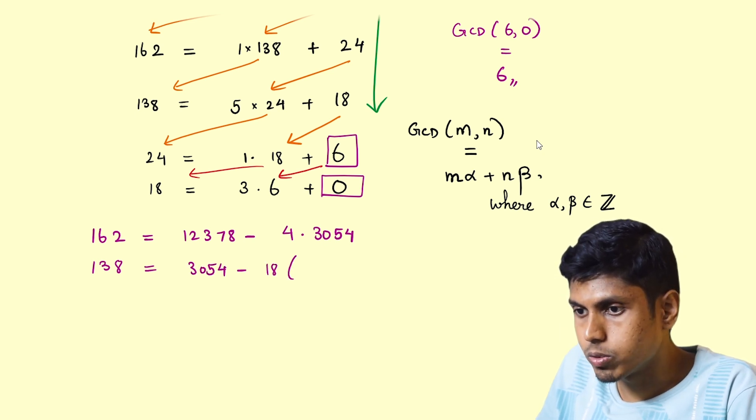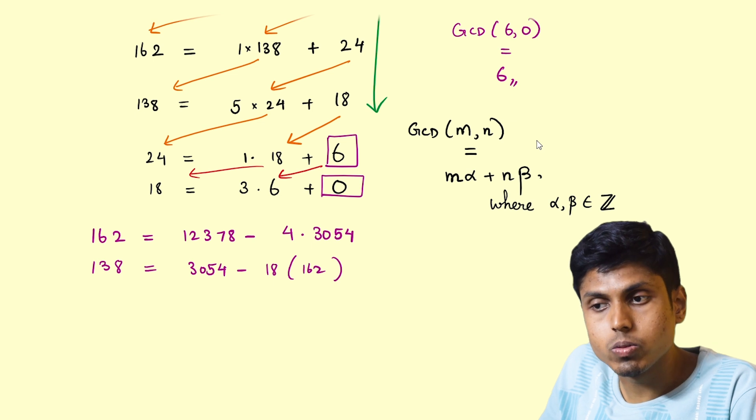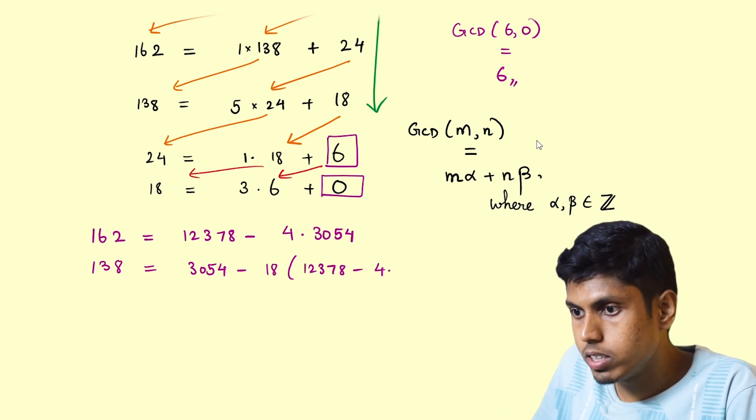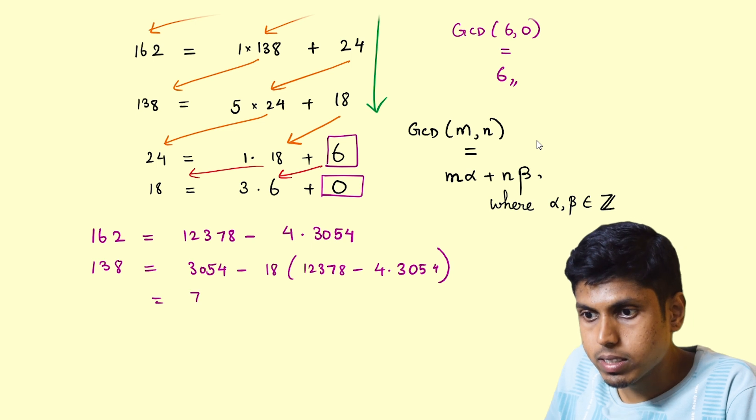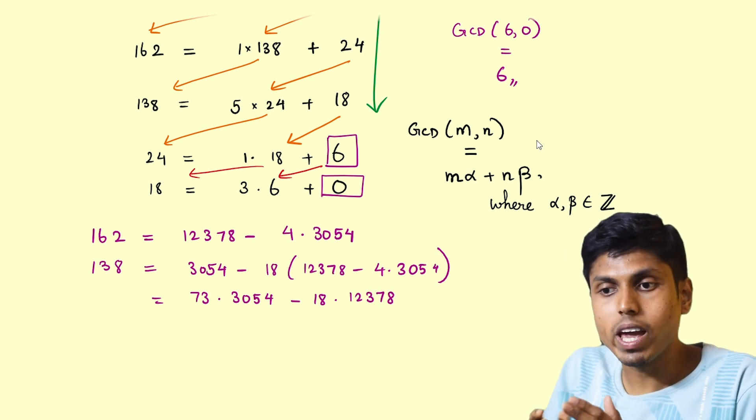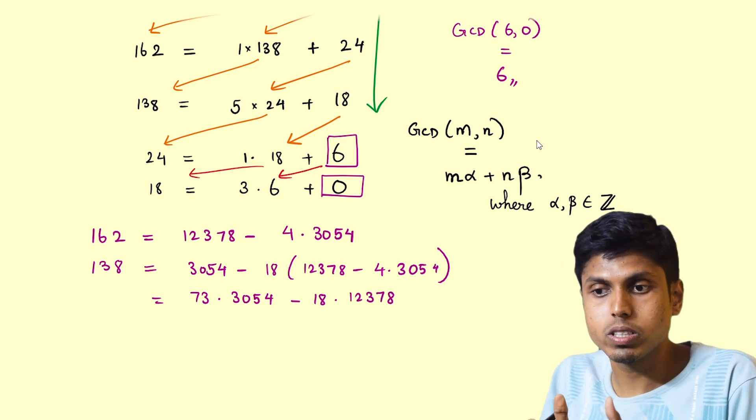138 is 3054 minus 18 times 162, but what is 162? It is 12378 minus 4 times 3054. So this would give us 73 times 3054 minus 18 times 12378. So this is the way in which one could represent 138 as a linear combination of m and n.